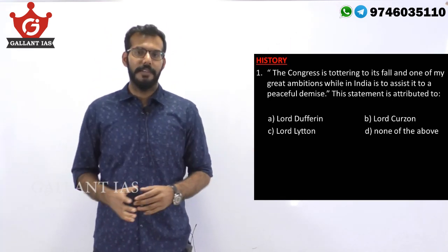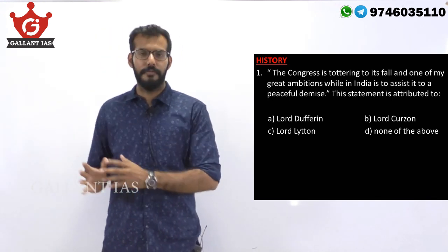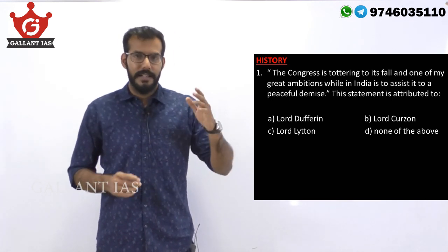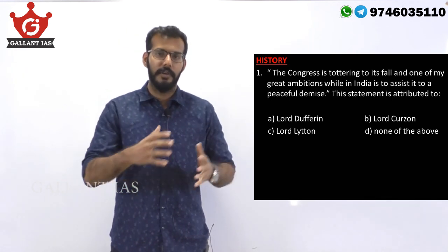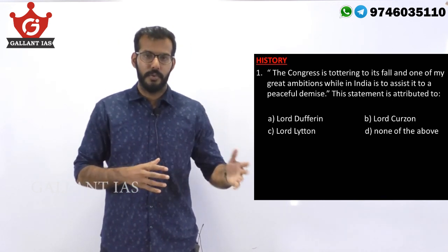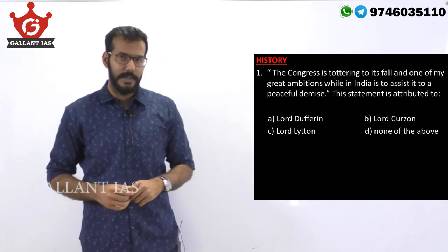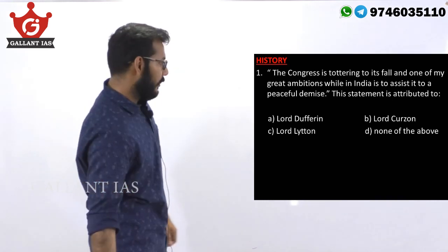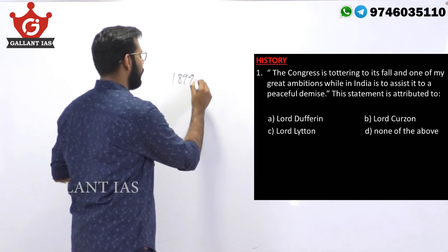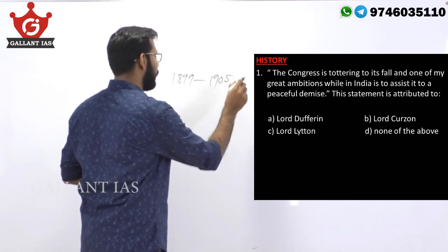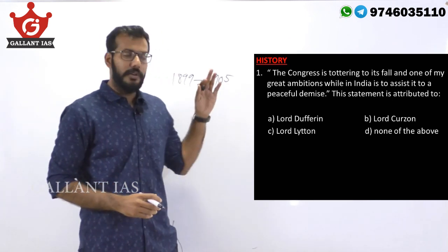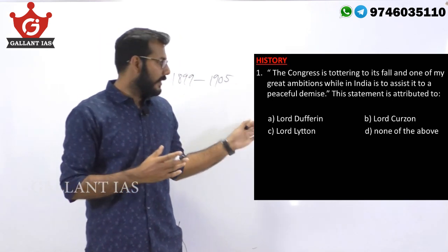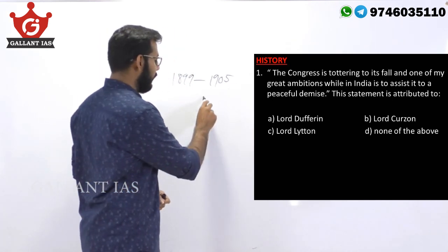The British establishment, the British Raj, held a very unfavorable view towards the Congress from the very beginning. This is quite clear from statements made by officers and people in high offices during its tenure. This statement was made by Lord Curzon, who held office from 1899 to 1905 as the Viceroy of India. He also infamously called the Congress a 'microscopic minority.' The answer to this question is B.